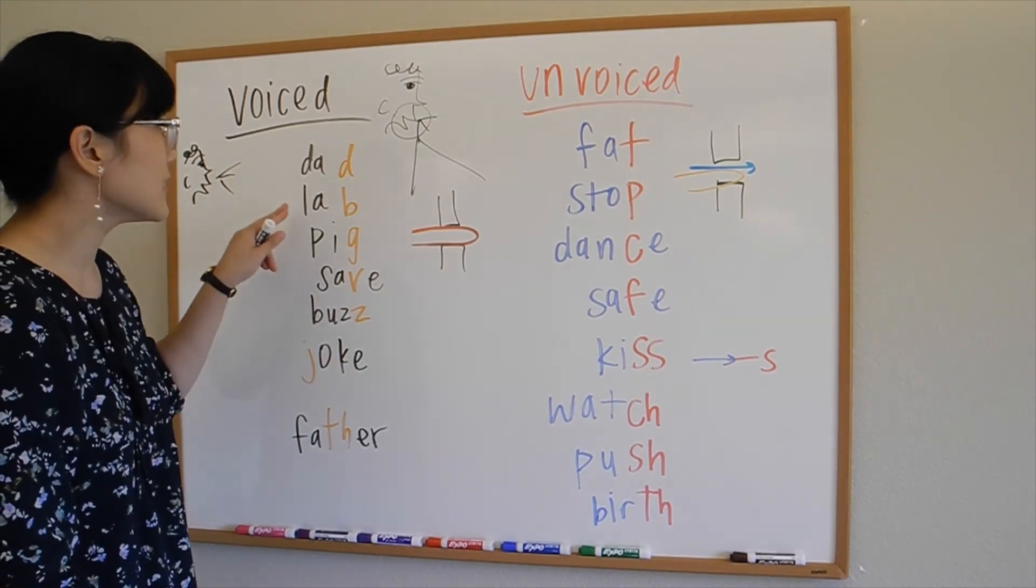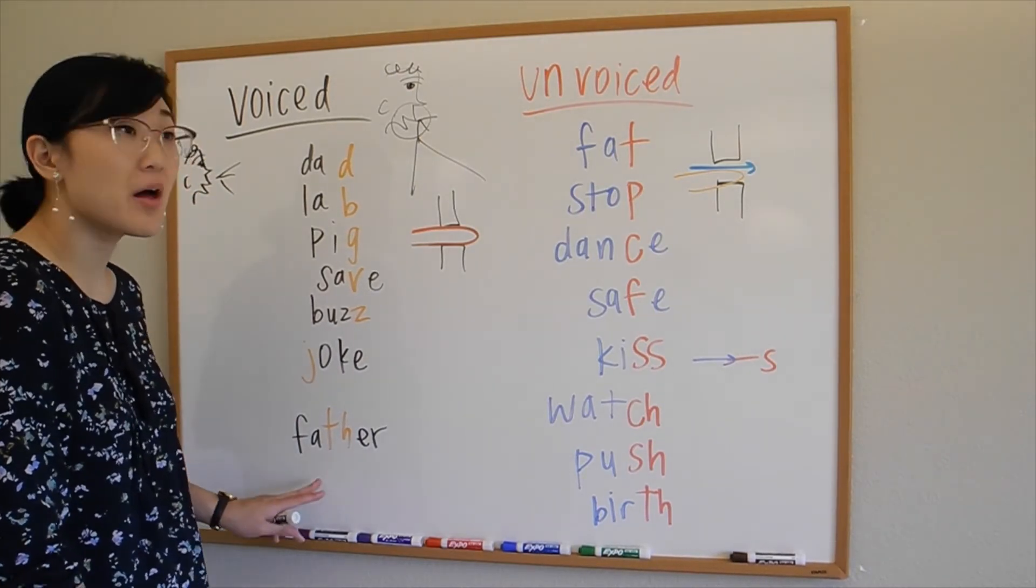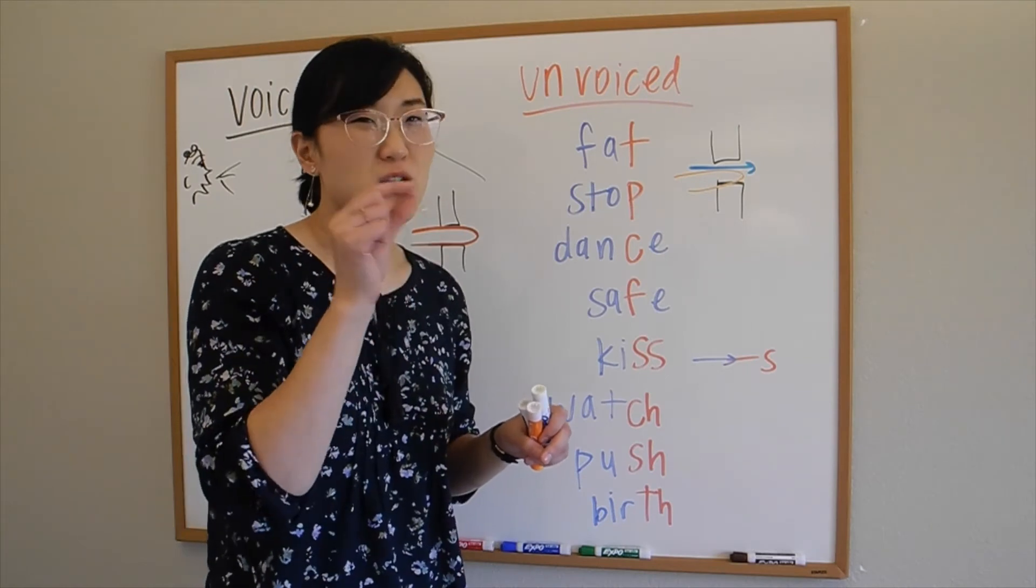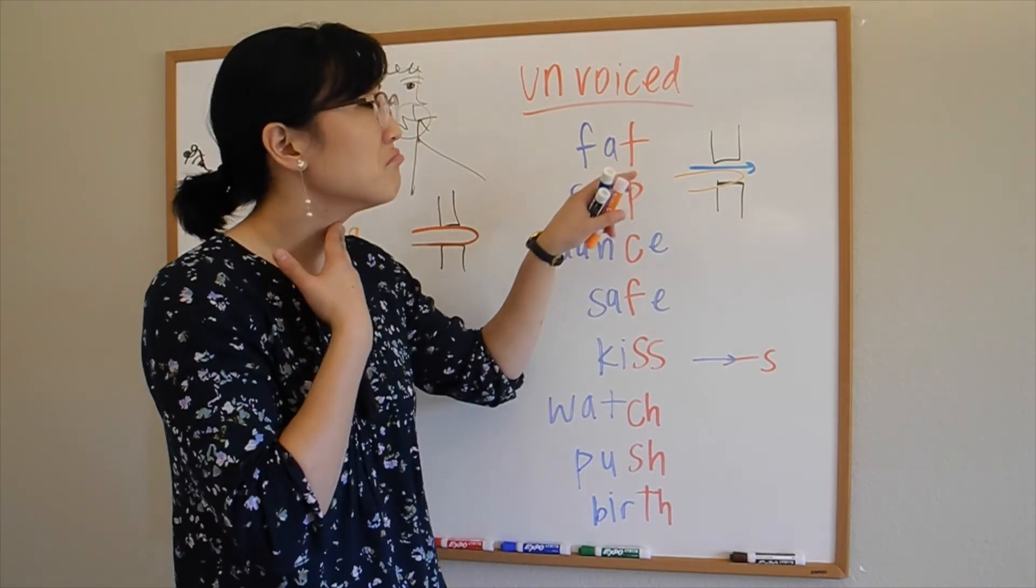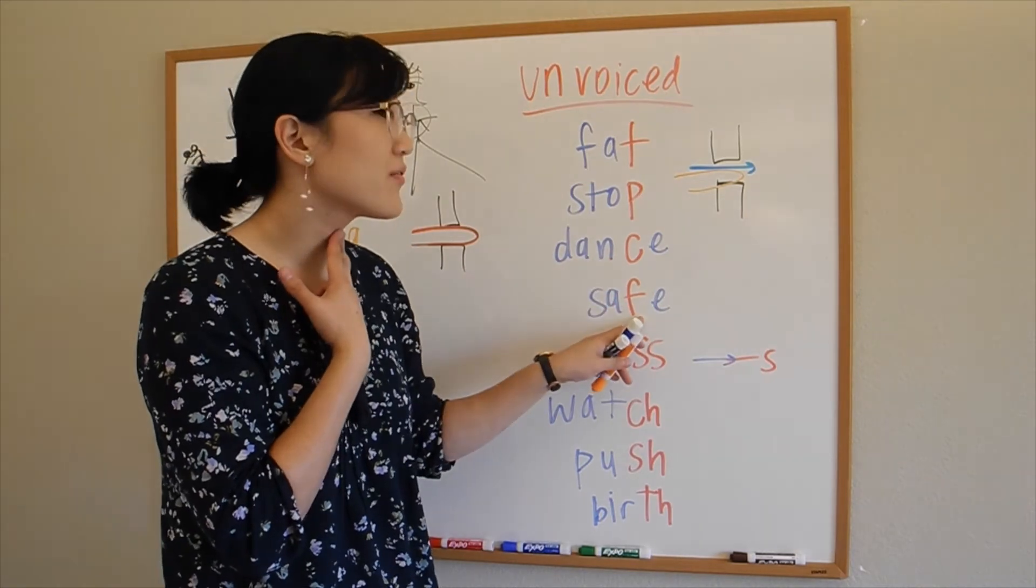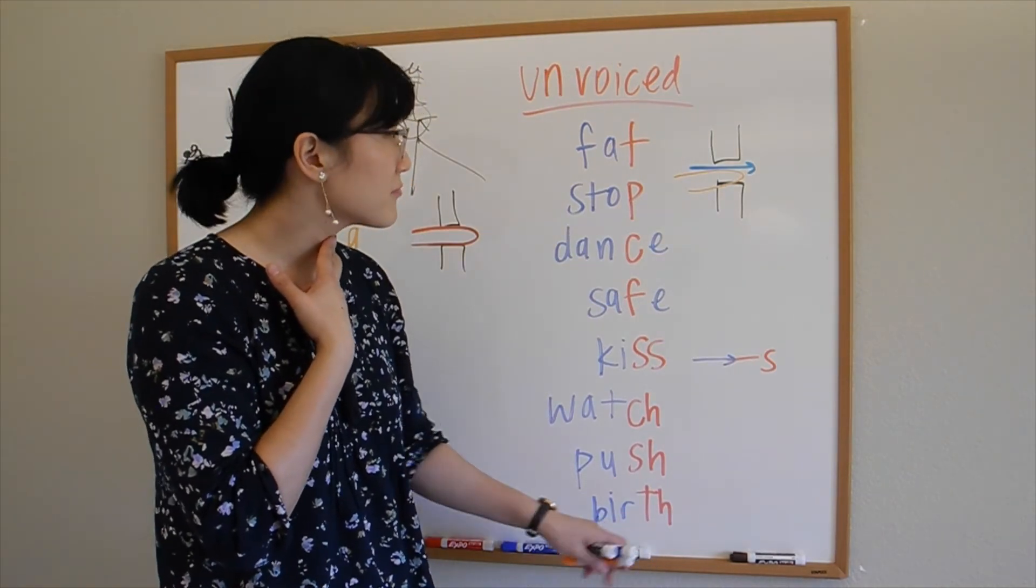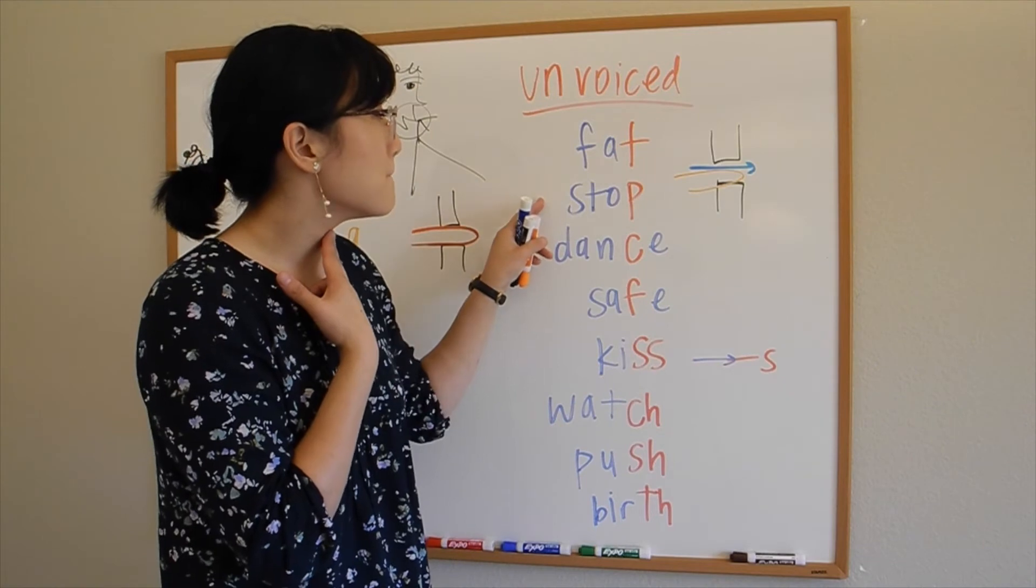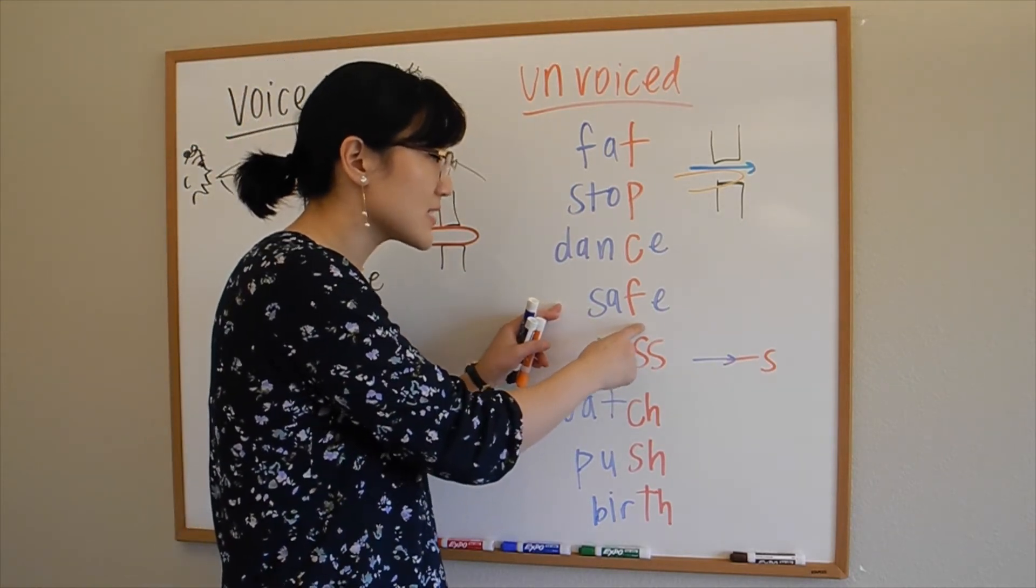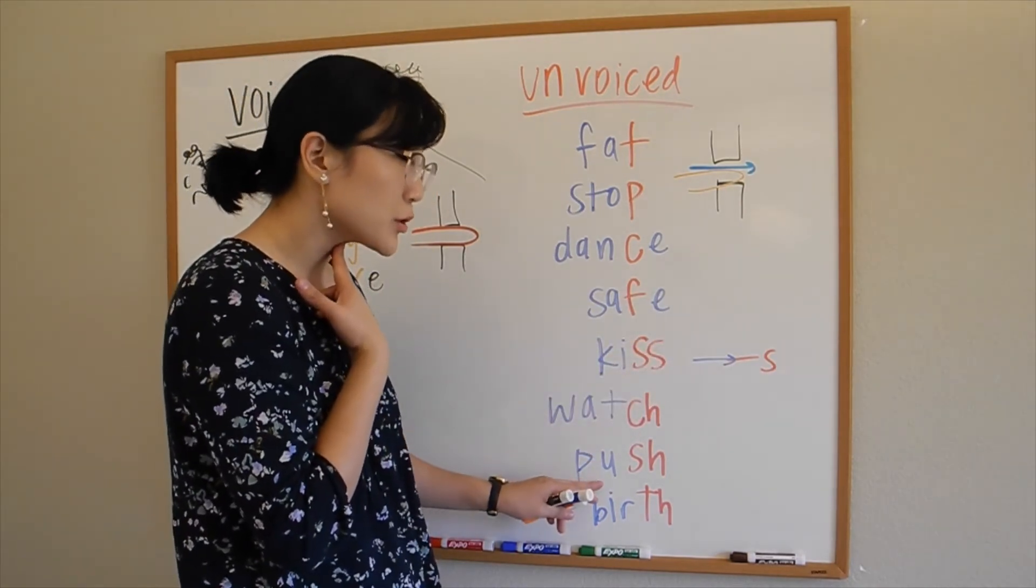So I gave you some of them. These are some words like dad, lab, pig, save, buzz, joke, father, mother, brother. The unvoiced are consonants that you can feel, but it's just very slightly. So like these two are similar: the 's' sounds. Fat, stop, dance, safe. Look at this consonant-vowel-consonant with that silent 'e': safe, a safe, kiss, watch, push, birth.